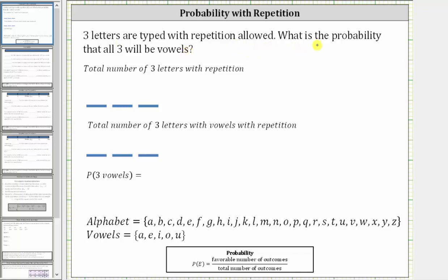Three letters are typed with repetition allowed. What is the probability that all three will be vowels? Let's first determine the total number of ways three letters can be typed with repetition allowed.